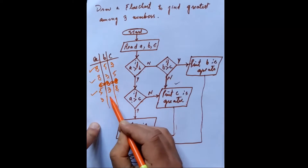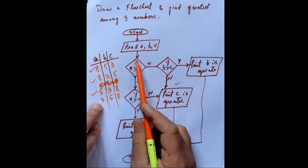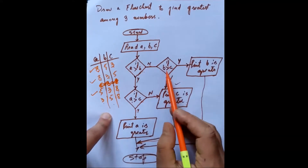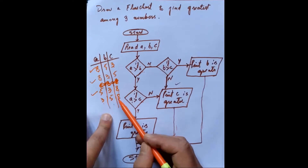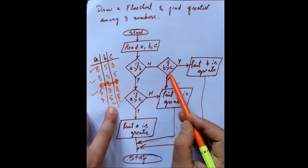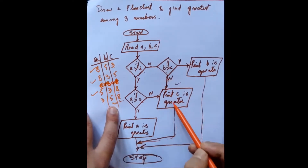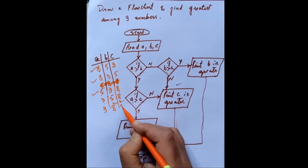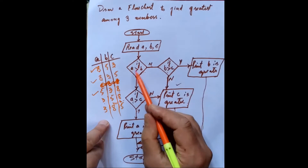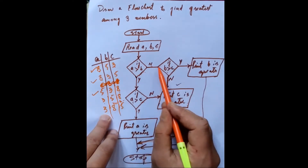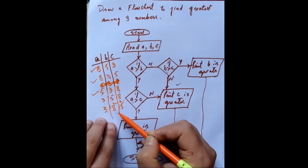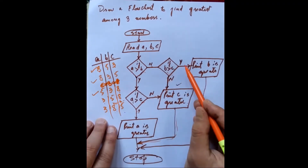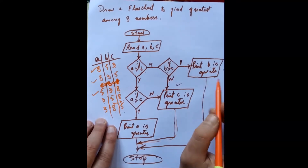What if it was 3, 5, 8? First condition: is A greater than B? Is 3 greater than 5? No. It will go through the no branch and check if B is greater than C. Is 5 greater than 8? No. It will go through that branch and write C is greater — because C is 8, C is greater, and it gets stopped. What if it was 3, 8, 5? First condition: is A greater than B? No, 3 is not greater than 8. It goes through no. Then B is compared to C: is B greater than C? Yes, 8 is greater than 5. It will write B is greater and get stopped.